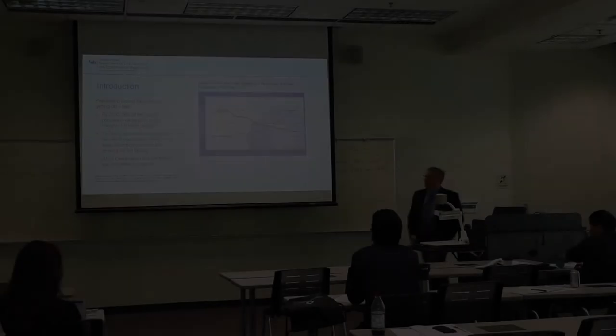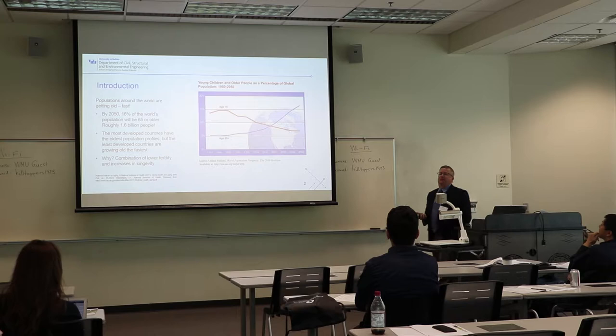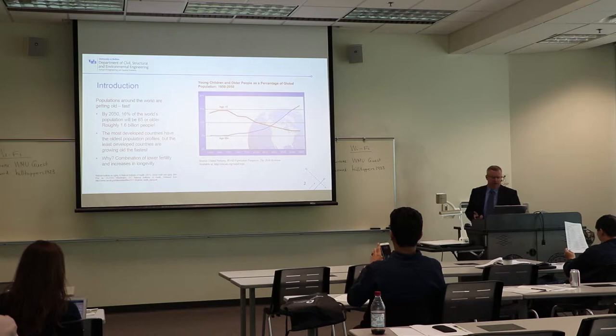Good morning. Basically, populations around the world are growing fast. Everybody in this room is probably well aware of this. By 2050, 16% of the world's population will be 65 or older, translating to about 1.6 billion people. That's a lot of people. The reasons for this are a combination of factors, but generally lower fertility and increases in longevity.